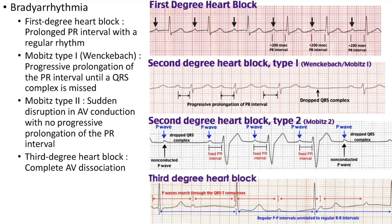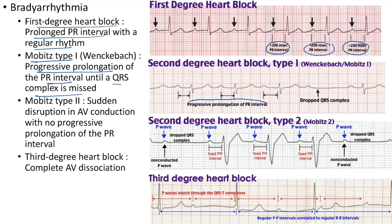First-degree heart block: there is prolonged PR interval (greater than 200 milliseconds) with a regular rhythm. Second-degree heart block type 1 (Wenckebach / Mobitz type 1): there is progressive prolongation of the PR interval until a QRS complex is dropped.